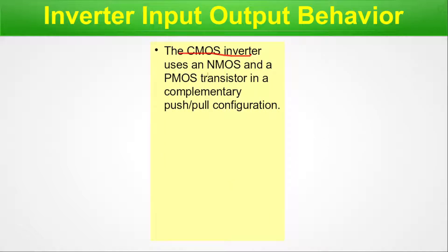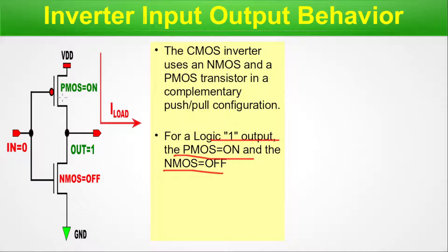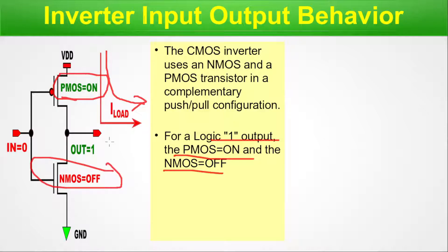Now, inverter input-output behavior. The CMOS inverter uses an NMOS and a PMOS transistor in complementary push-pull configuration. For a logic one output, the PMOS will be on and the NMOS will be off — current is flowing through the PMOS path and the NMOS path is broken. So in output we have logic one and correspondingly at input we have zero.